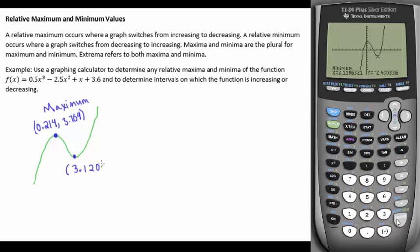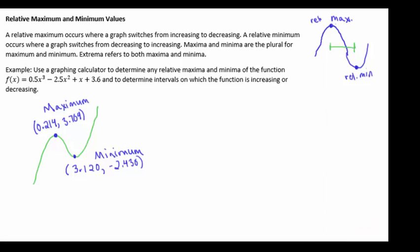That's my minimum. Now we can easily, because we found those two points, figure out what our intervals are for increasing or decreasing. We're increasing from negative infinity until we get to our maximum, so from negative infinity until we get to 0.214.